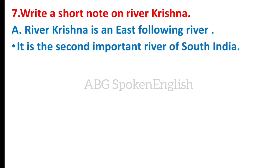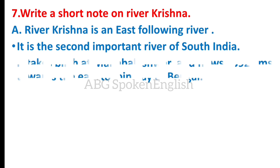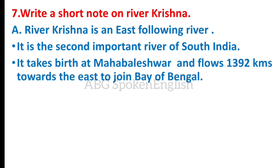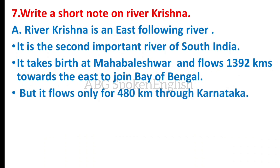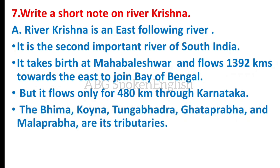River Krishna is an east flowing river. It is the second important river of South India. It takes birth at Mahabalishwara and flows 1392 kilometers towards the east to join the Bay of Bengal. It flows only for 480 kilometers through Karnataka.